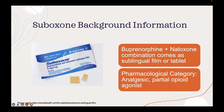That leads me to the star of the day, Suboxone. Suboxone is a combination of buprenorphine and naloxone, which can come as a sublingual film or tablet. The UW Health formulary supplies it as a sublingual film, and it is an analgesic and a partial opioid agonist.